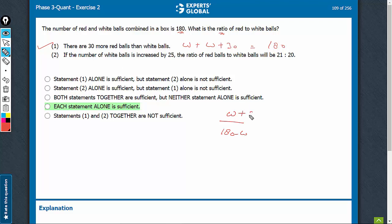So W plus 25 upon the red still remain 180 minus W, the ratio will be 21 upon 20.